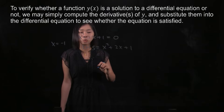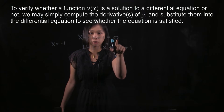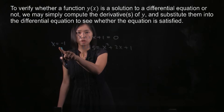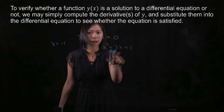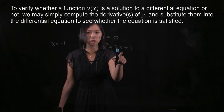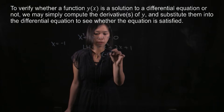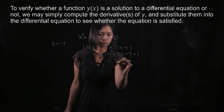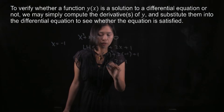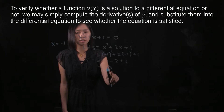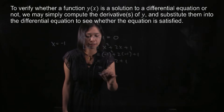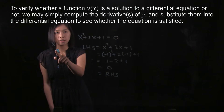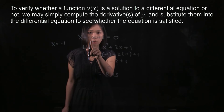Right now I do not know whether this is equal to 0 when x is negative 1. So I will substitute x equals negative 1 into the left hand side of this quadratic equation. So negative 1 squared plus 2 times negative 1 plus 1 gives 0, which is the same as the right hand side. It means that x equals negative 1 is a solution to this quadratic equation.